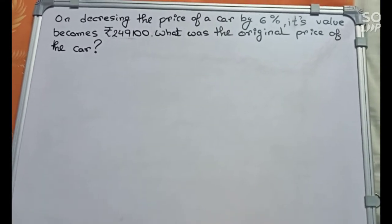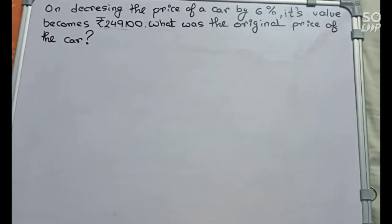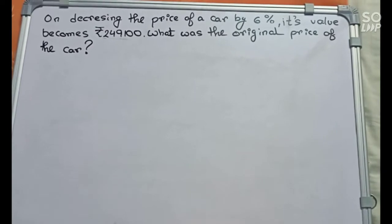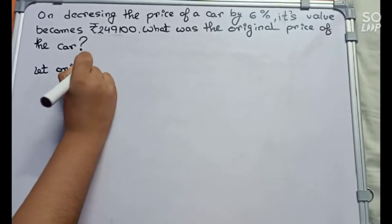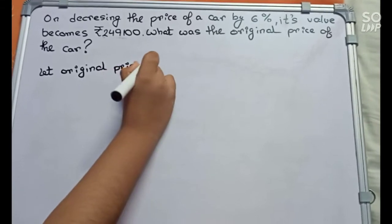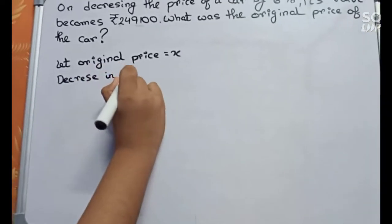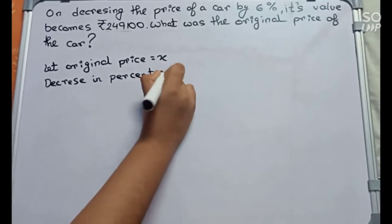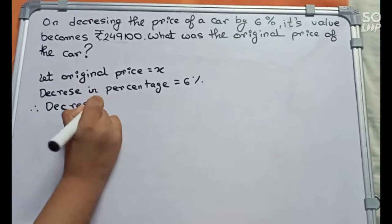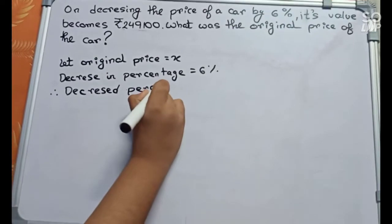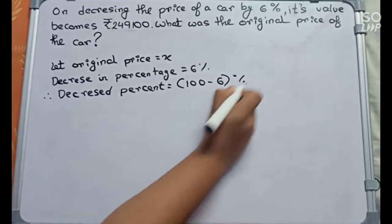Hello guys, welcome to this video. In this video, our question is on decreasing the price of a car by 6% — its value becomes rupees 2,49,100. What was the original price of the car? Let's start. First, we will take the original price equals to x. Decrease in percentage equals to 6%. Therefore, decreased percentage equals to 100 minus 6 percent, which equals to 94%.